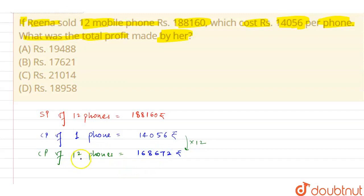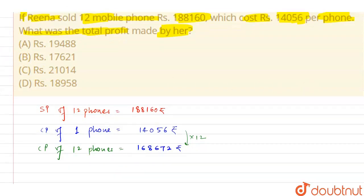Alright students, we now have the CP of 12 phones and the SP of 12 phones. Now we need to find out how much profit Reena made.